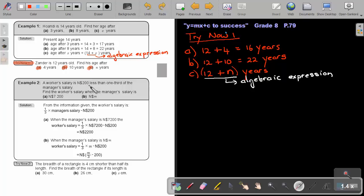A worker's salary is 200 less than one-third of the manager's salary. I'm going to highlight a few things. It's 200 less, so it's a subtraction, than one-third of the manager's salary. And now I'm asking you, find the worker's salary when the manager's salary is 7200. So let's first get a general formula or expression. From the information given, the worker's salary is one-third of the manager's salary, and then 200 less than that. So subtract, less means subtract, 200.